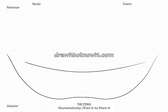Now draw its bulbous basis, which resembles a bag of marbles. In the basis, draw the corticofugal tracts, which are the corticospinal and corticobulbar tracts. They are interspersed between large scattered supplementary motor nuclei called pontine nuclei.